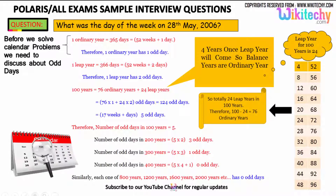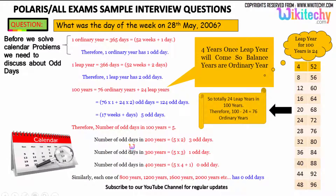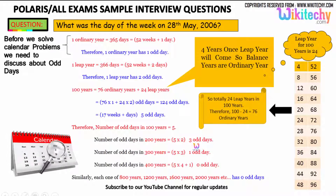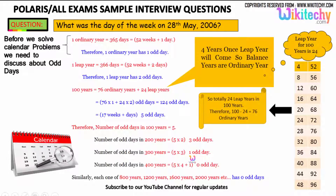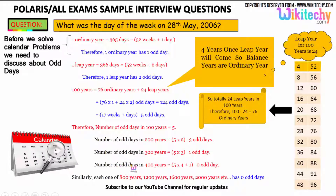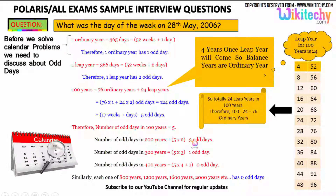The number of odd days in 100 years is 5. For 200 years: 5 × 2 = 10, which gives 3 odd days (7 + 3). For 300 years: 5 × 3 = 15, so 14 + 1, giving 1 odd day. For 400 years, there are 0 odd days. So: 100 years = 5, 200 years = 3, 300 years = 1, 400 years = 0.